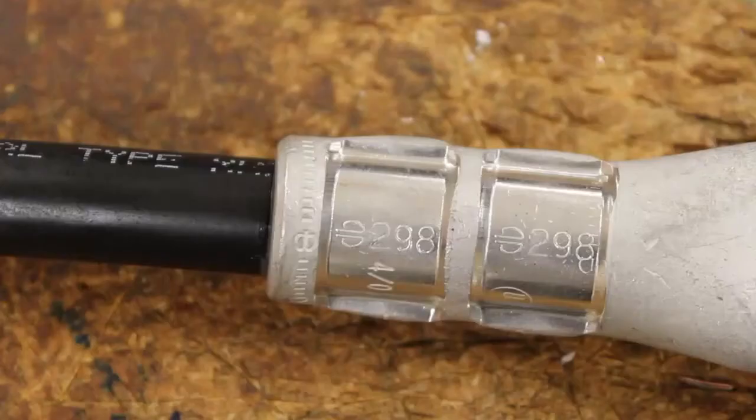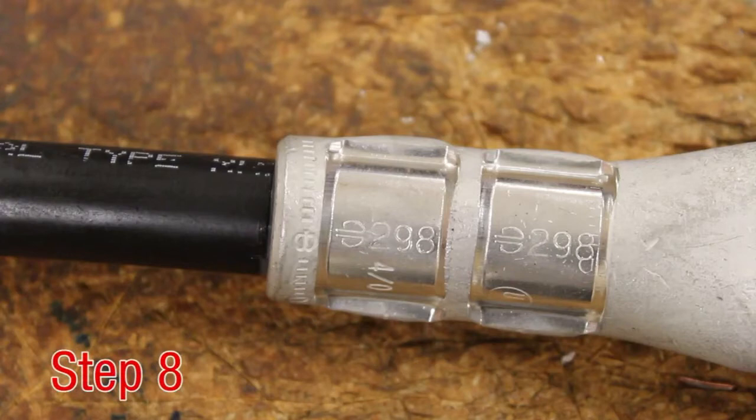Once all the crimps have been completed, the connection is ready and can be inspected for proper installation. The embossment made by the die should match that on the connector.